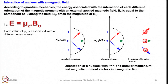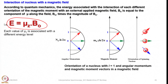Let us look at the interaction of NMR active nuclei with the magnetic field. According to quantum mechanics, the energy associated with the interaction of each different orientation of the magnetic moment with an external applied magnetic field B₀ equals the component of the magnetic moment μz along the field times the magnitude of B₀ — that is, E = μz · B₀. Each value of μz is associated with a different energy level. For example, for a nucleus with I = 1, we have orientations of the angular momentum and magnetic moment vectors in a magnetic field.